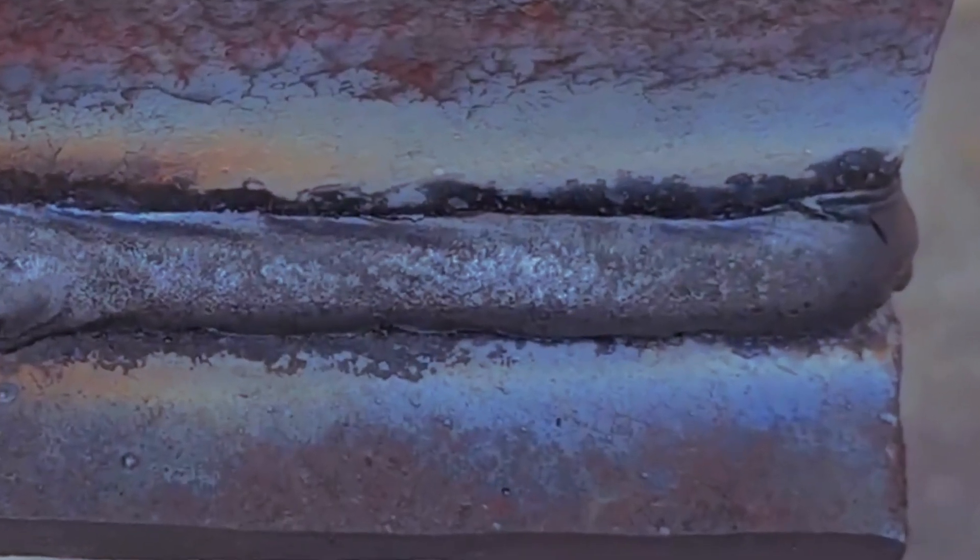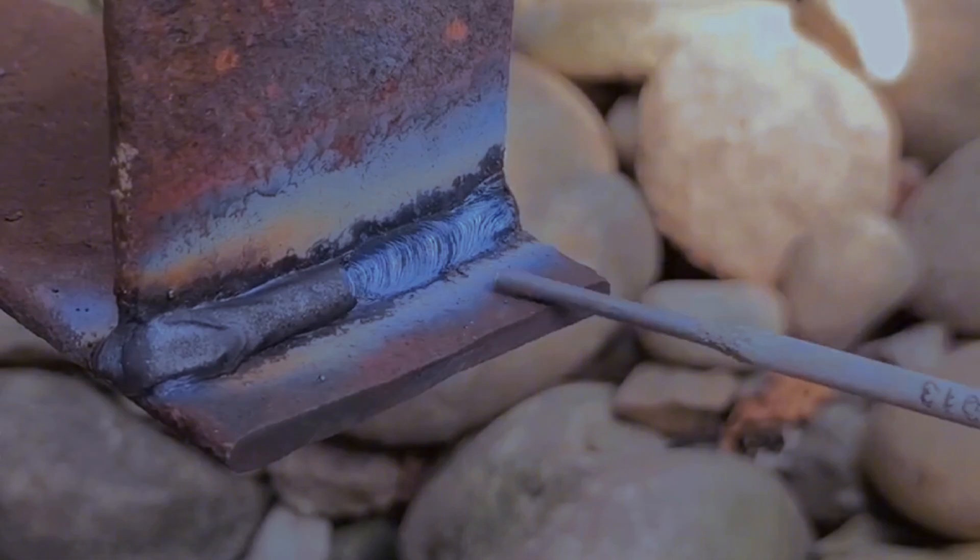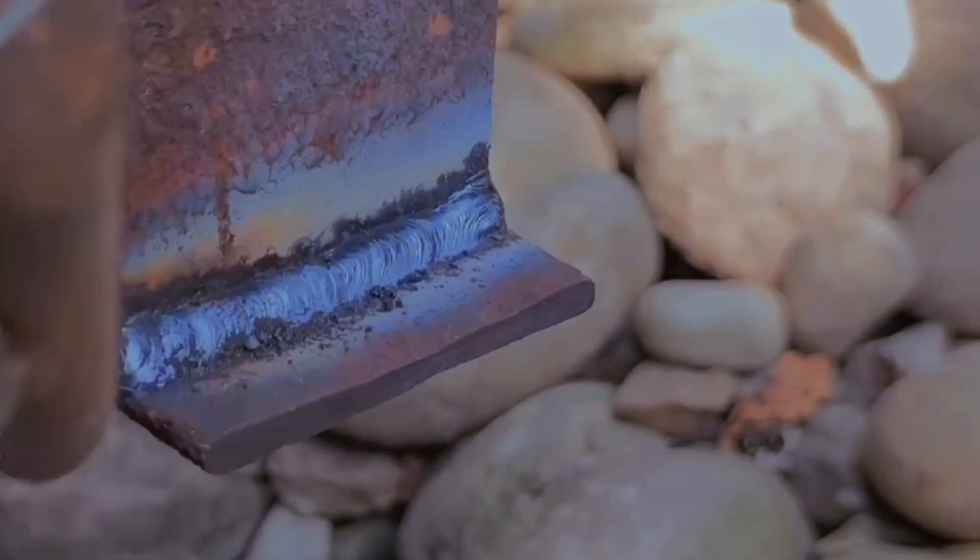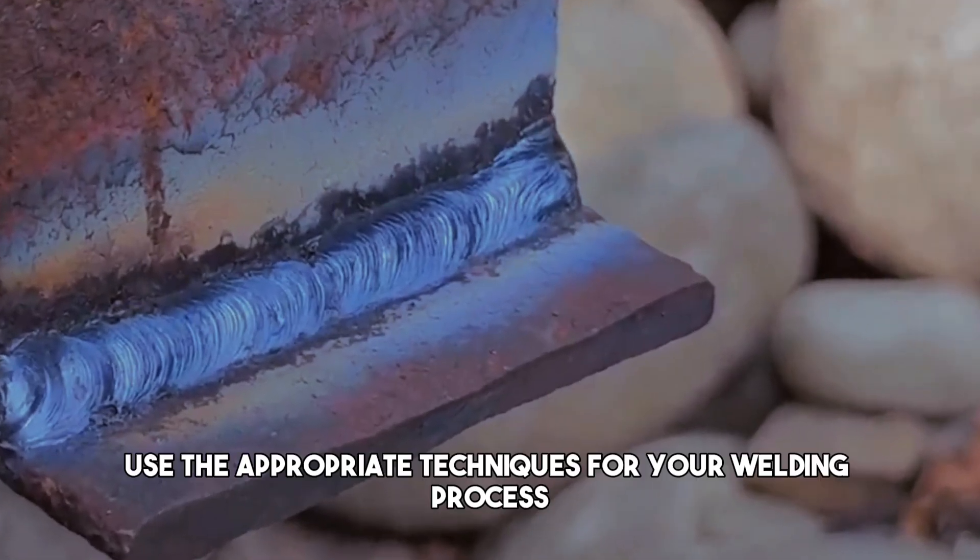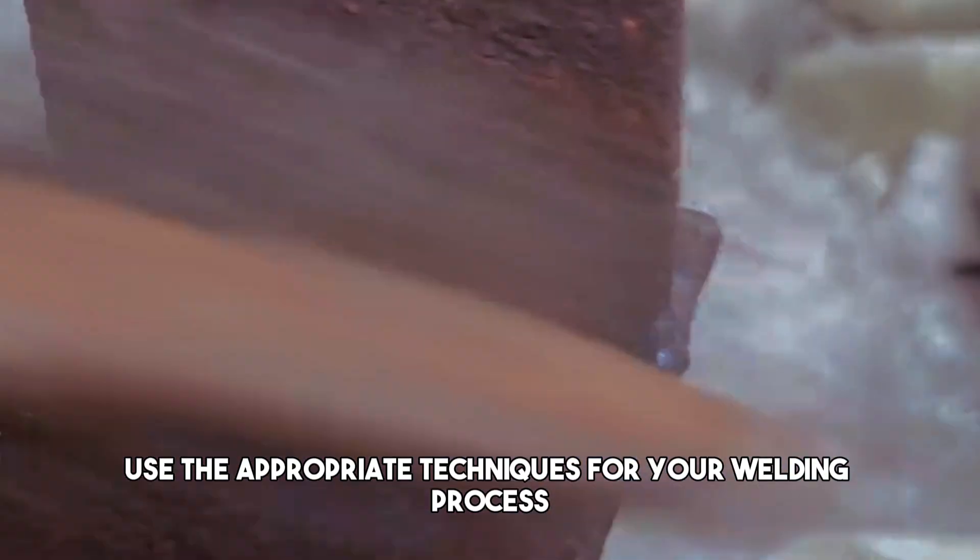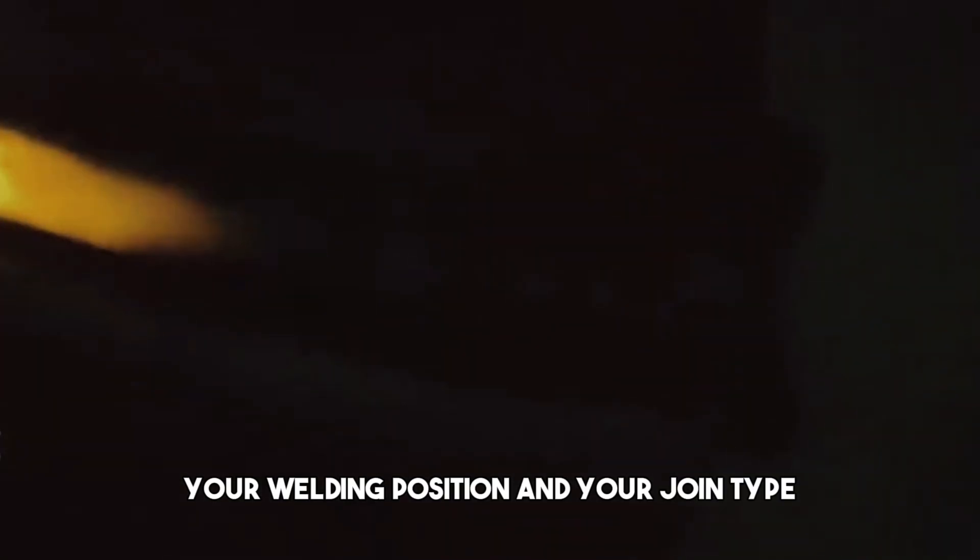If you use the wrong techniques, you can end up with a bad weld that has defects like distortion, cracks, holes, or slag inclusion. These defects can compromise the strength, appearance, and durability of your weld. To prevent this, use the appropriate techniques for your welding process, your welding position, and your joint type.